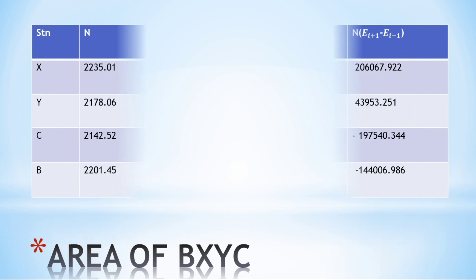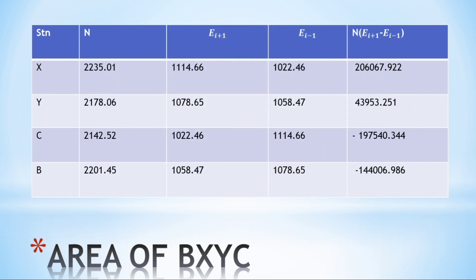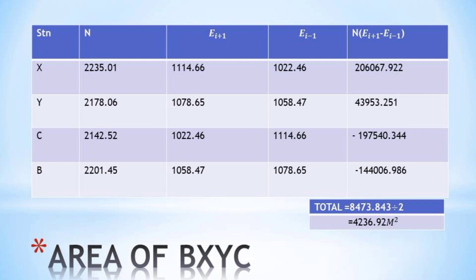Let me demonstrate that in a tabular format with five columns. The first section will be for the station, the second will be for the northing, the third will be the easting found on the station that is after, then the next will be the easting found on the station which is before.